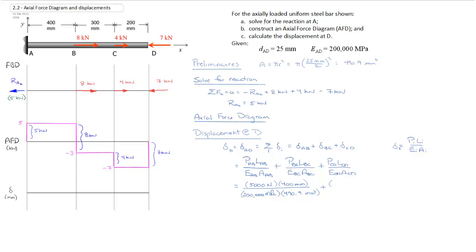Now I'll put in the load between B and C — we have to remember to include the negative sign because it's in compression. So we put negative 3,000 newtons, a length of 300 millimeters over which it's applied, and our E and A at the bottom: 200,000 megapascals and 490.9 millimeters squared.